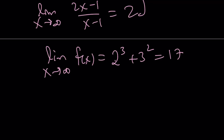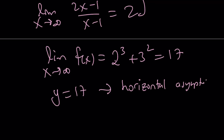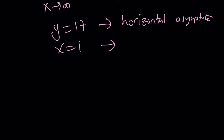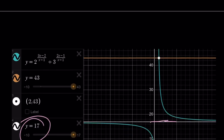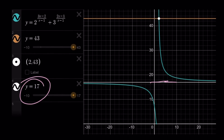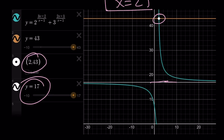So as x approaches positive or negative infinity, our function approaches 17, meaning y equals 17 is our horizontal asymptote. We already noted that x equals 1 is our vertical asymptote, where the function has an infinite limit at that finite point. Looking at the graph, the function appears as two pieces due to the vertical asymptote at x equals 1, with the horizontal asymptote y equals 17. The solution x equals 2 is identified by the intersection point (2, 43) — wait, the function value there is 43 — confirming x equals 2 is the only solution to this equation.